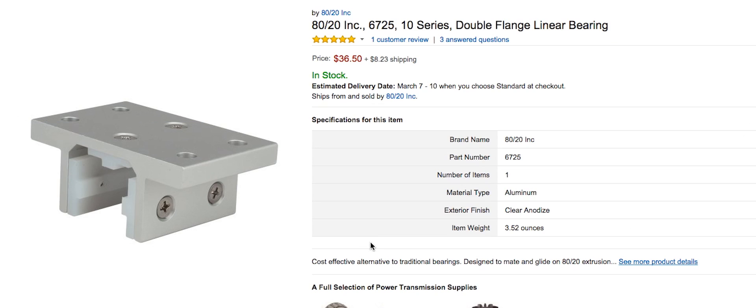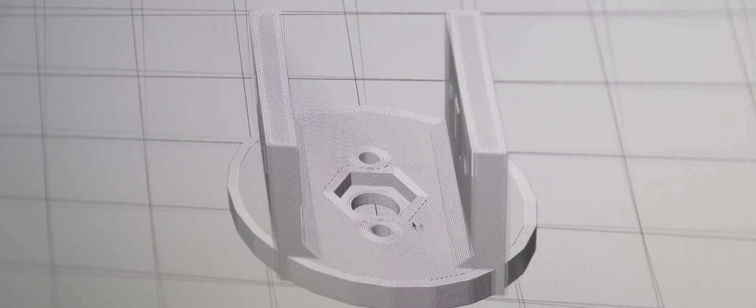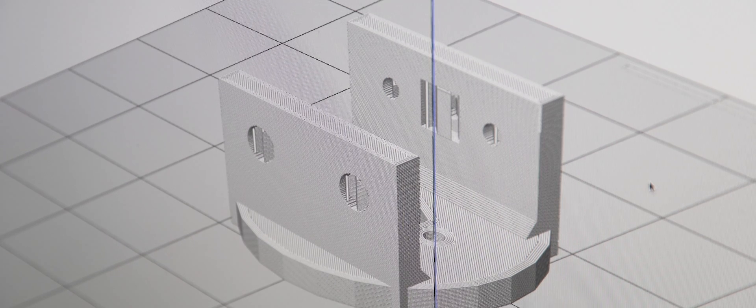Now it's time to move on to the slider carriage. 8020 makes an aluminum carriage, but it costs about $40, and there's no obvious way to add a 3/16 stud that you would need to mount a tripod in. So let's fire up the 3D printer and print one of our own.